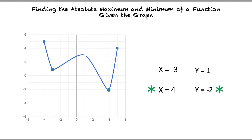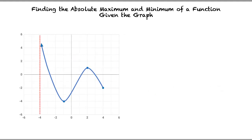Let's take a look at another type of problem. In this problem, we have an asymptote we must consider. At the asymptote, the function moves to y equals infinity at x equals negative 4. If the function goes to infinity at the asymptote, do we consider x equals negative 4 for the absolute maximum? In this case, the function moves to positive infinity as it gets closer to x equals negative 4. If we continue to draw the line of the function, it would continue to increase. Because the function moves to positive infinity, there is no absolute maximum.